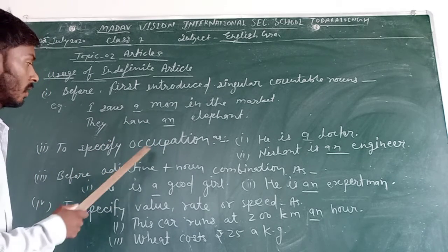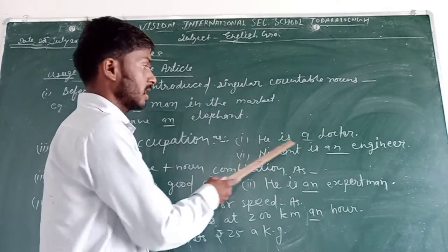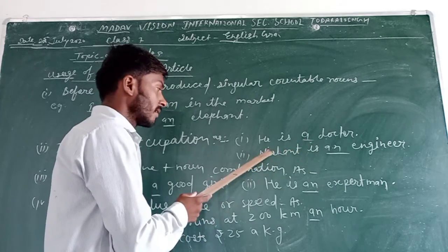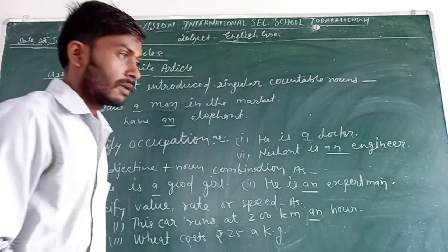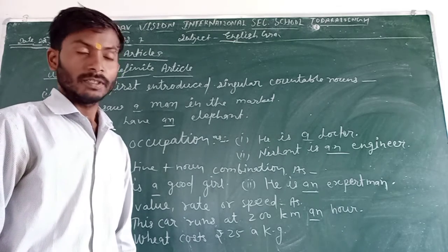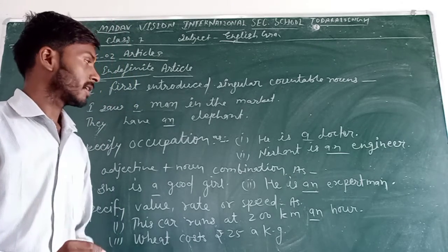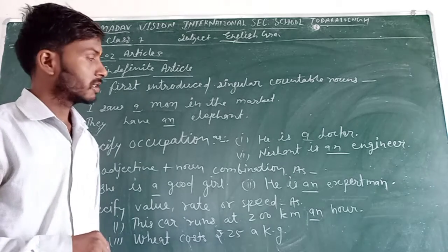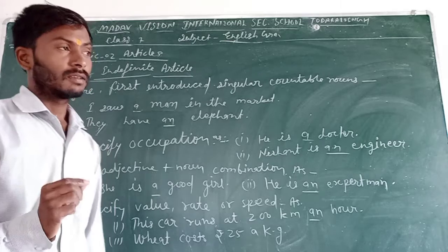To specify occupation. He is a doctor. And Nissan is an engineer. In previous class, we have studied that A is used with consonant sound and an is used with vowel sounds.